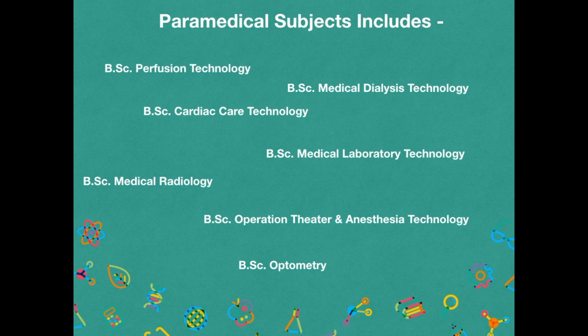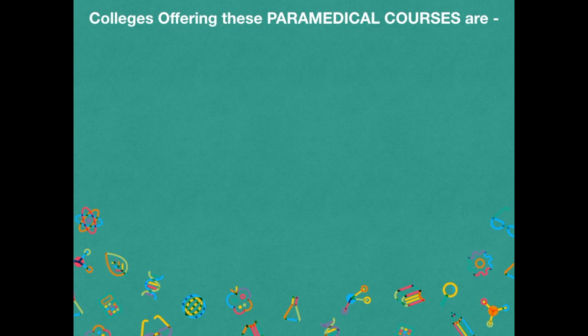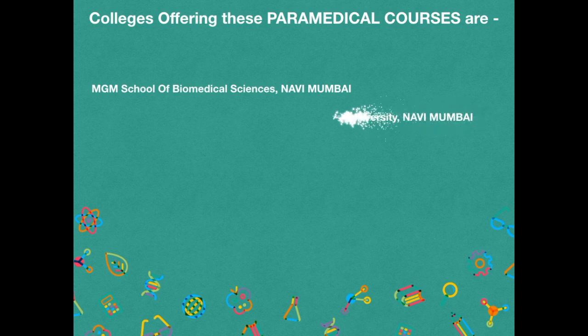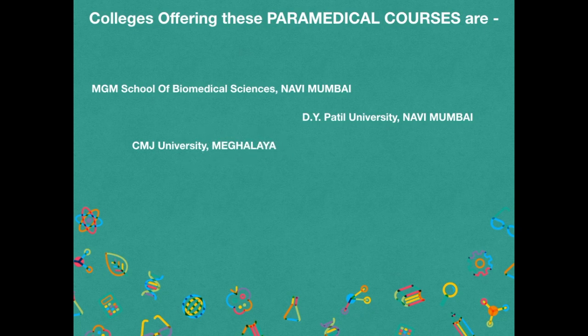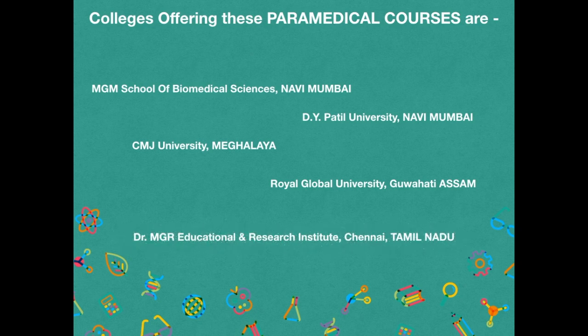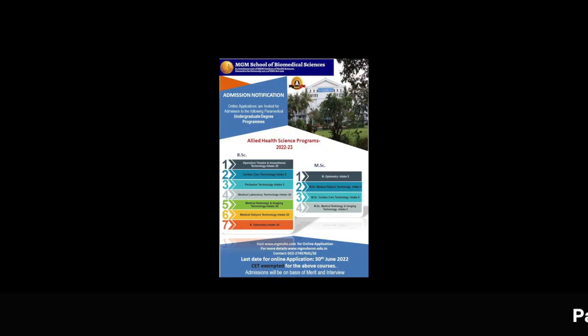Colleges offering these paramedical courses include: MGM School of Biomedical Sciences, Navi Mumbai; Dr. D.Y. Patil University, Navi Mumbai; CMJ University; Royal Global University, Goalpara, Assam; and Dr. MGR Educational and Research Institute, Chennai, Tamil Nadu. There are some other universities as well — you can search for them and visit the university website for admission process details. I have also managed a brochure of MGM School of Biomedical Sciences which I'm sharing with you all.